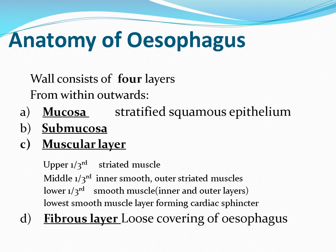The esophagus consists of four layers: the inner mucosal layer of stratified squamous epithelium, then submucosa containing blood vessels and neural tissue, then the muscular layer — the upper one-third has striated muscles, middle one-third has both smooth and striated muscles, and the lower one-third contains only smooth muscles in two layers, inner and outer, which also form the cardiac sphincter. The outer layer is a loose covering.